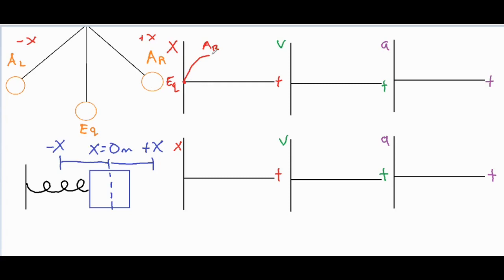When it's at its greatest position it's going to pull it back with the greatest amount of force, sending it back to the equilibrium position once again. From there it's going to move back to its greatest negative position, which we call AL. Because that force is increasing more and more as we go towards AL, the rate that the position is changing is going to be less and less. Then at AL the greatest restorative force pulls it back to the equilibrium position once again.